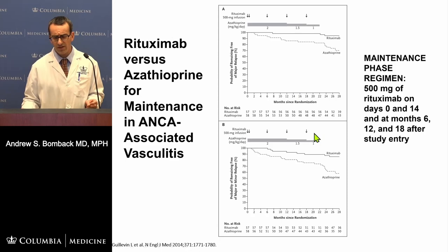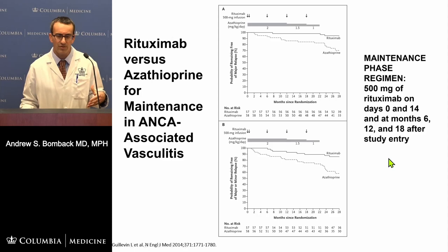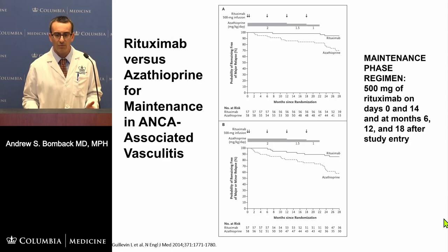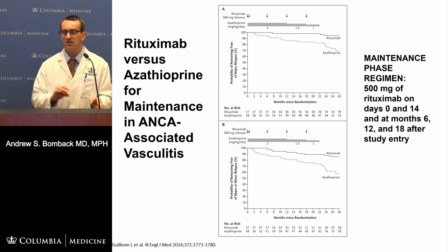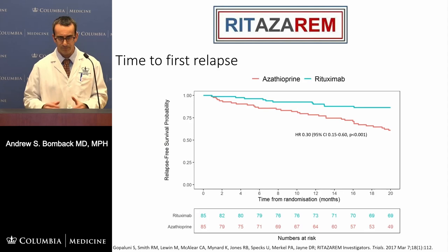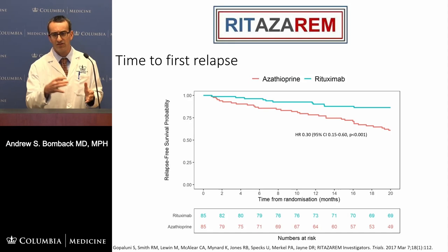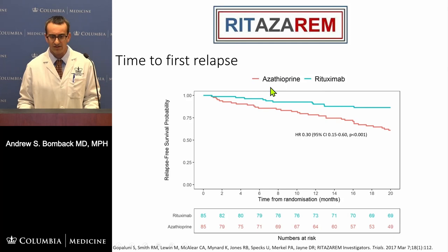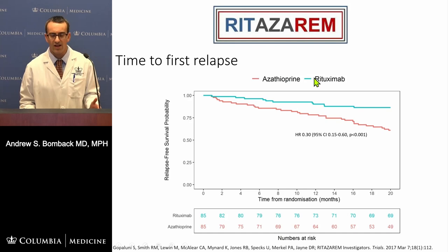One pushback against Main RITSAN was that there were too many PR3s and not enough MPOs, making the population more primed for relapses. Subsequent studies addressed this with better PR3-to-MPO balance. The Ritazoram study looks almost identical in results — again showing benefit of rituximab compared to azathioprine — but with more MPO representation. This improves on Main RITSAN by giving more information about rituximab maintenance when the ANCA is MPO and the cohort isn't heavily weighted toward PR3s.